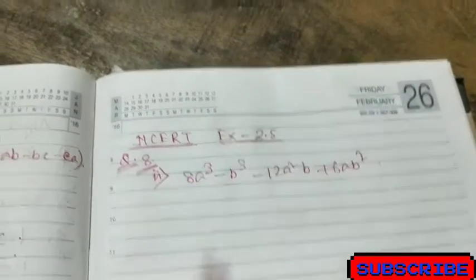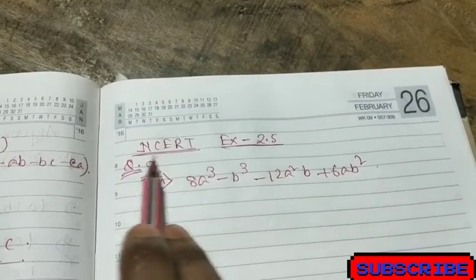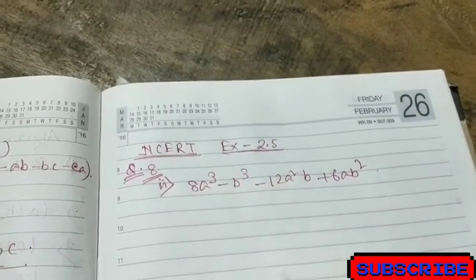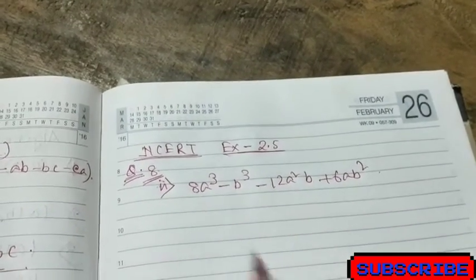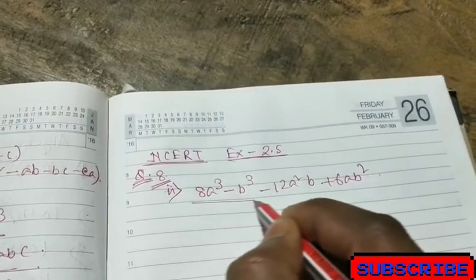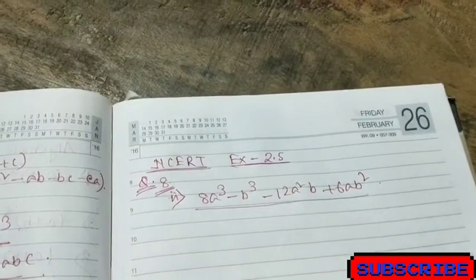Next we have an application of identities. Here we have taken one question from NCERT Exercise 2.5, question number 8. We need to factorize this expression: 8a cube minus b cube minus 12a square b plus 6ab square.